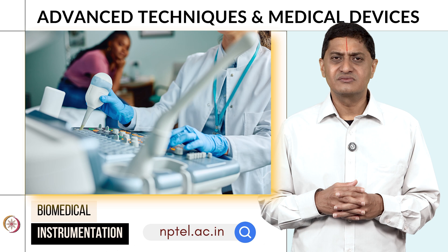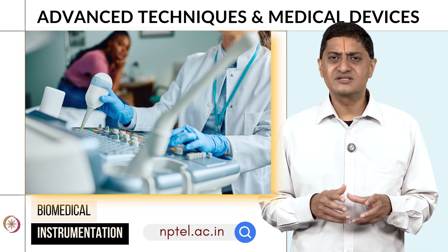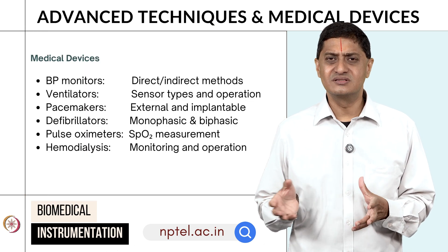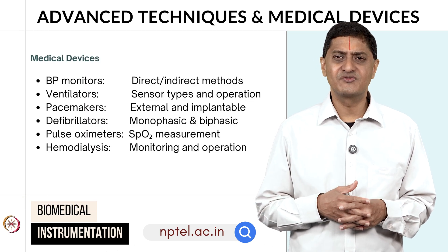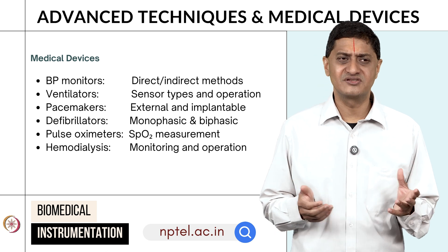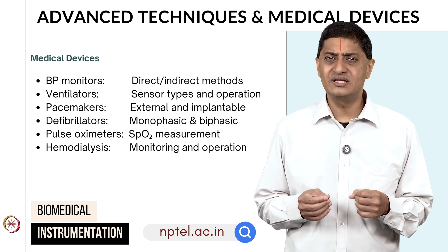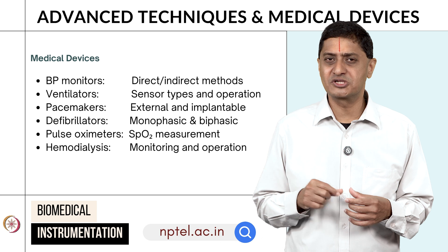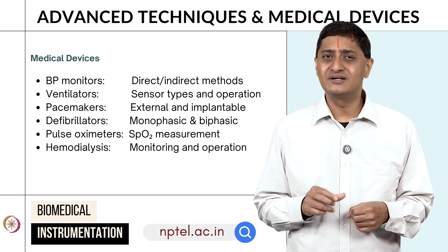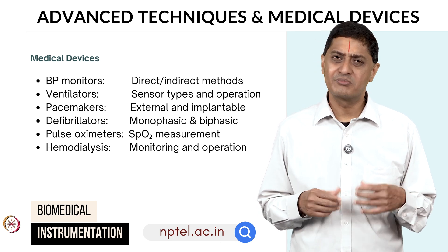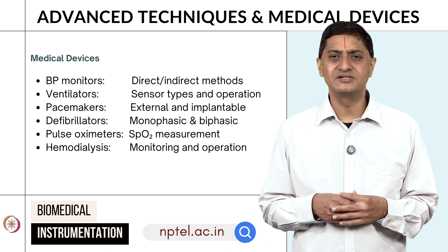Then for measuring blood pressure we discuss various direct and indirect methods. For example, the cuff-based sphygmomanometer still being used in primary care centers, and in the ICU for continuous blood pressure monitoring we use direct blood pressure measurement systems, probably using catheters.